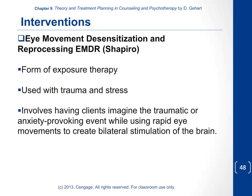EMDR — Eye Movement Desensitization and Reprocessing Therapy — is a specific form of exposure therapy used primarily with trauma and stress. It involves having clients imagine a traumatic or anxiety-provoking event while using rapid eye movements to create bilateral stimulation of the brain. There is controversy around it given its unconventional mechanism, but it is recognized as an evidence-based technique by the VA and is used quite a bit for trauma. Anecdotally, some clients find it very helpful while others do not.